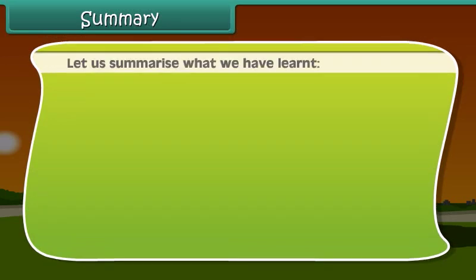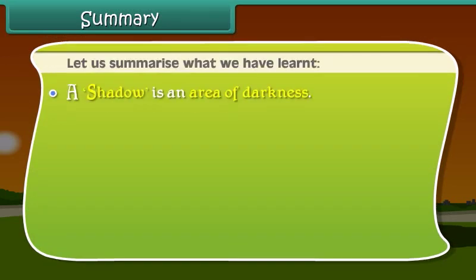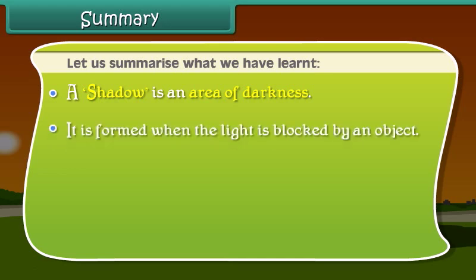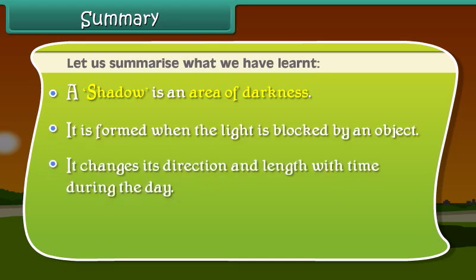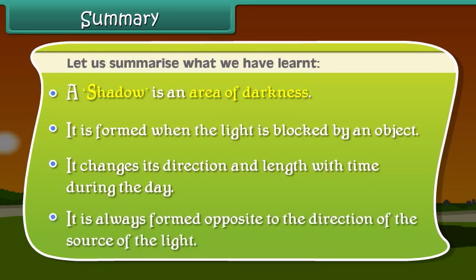Now, friends, let's summarize what we have learned. A shadow is an area of darkness. It is formed when the light is blocked by an object. It changes its direction and length with time during the day. It is always formed opposite to the direction of the source of the light.